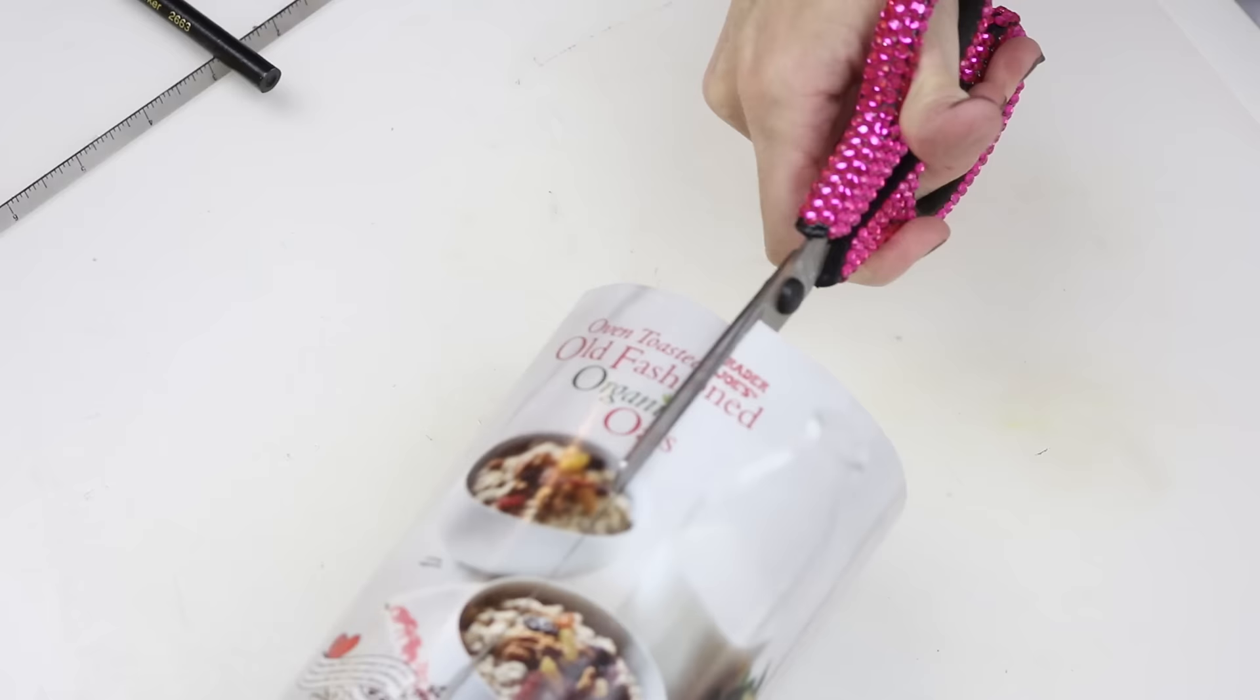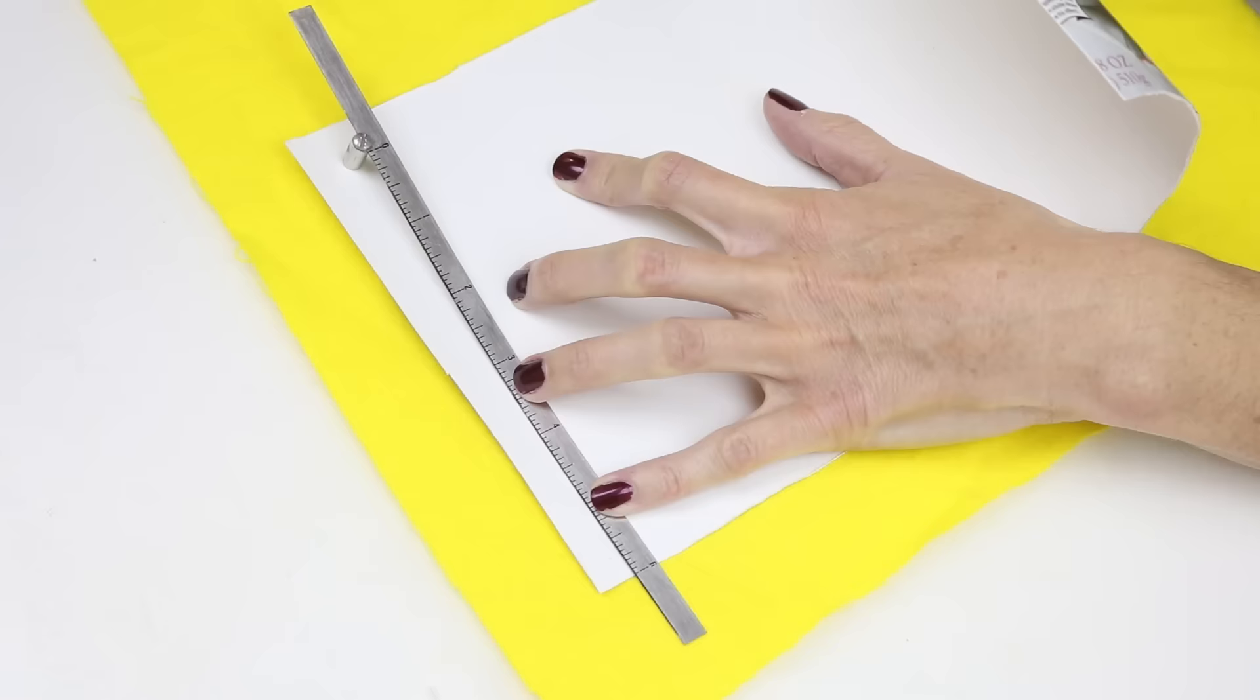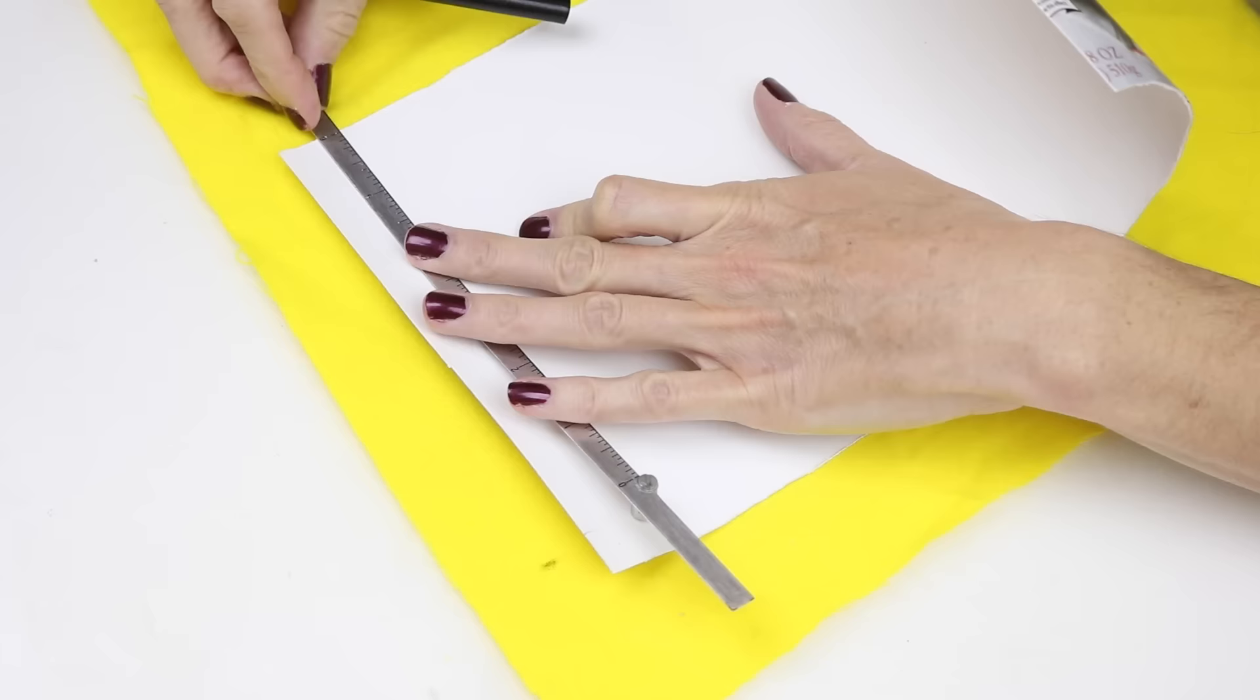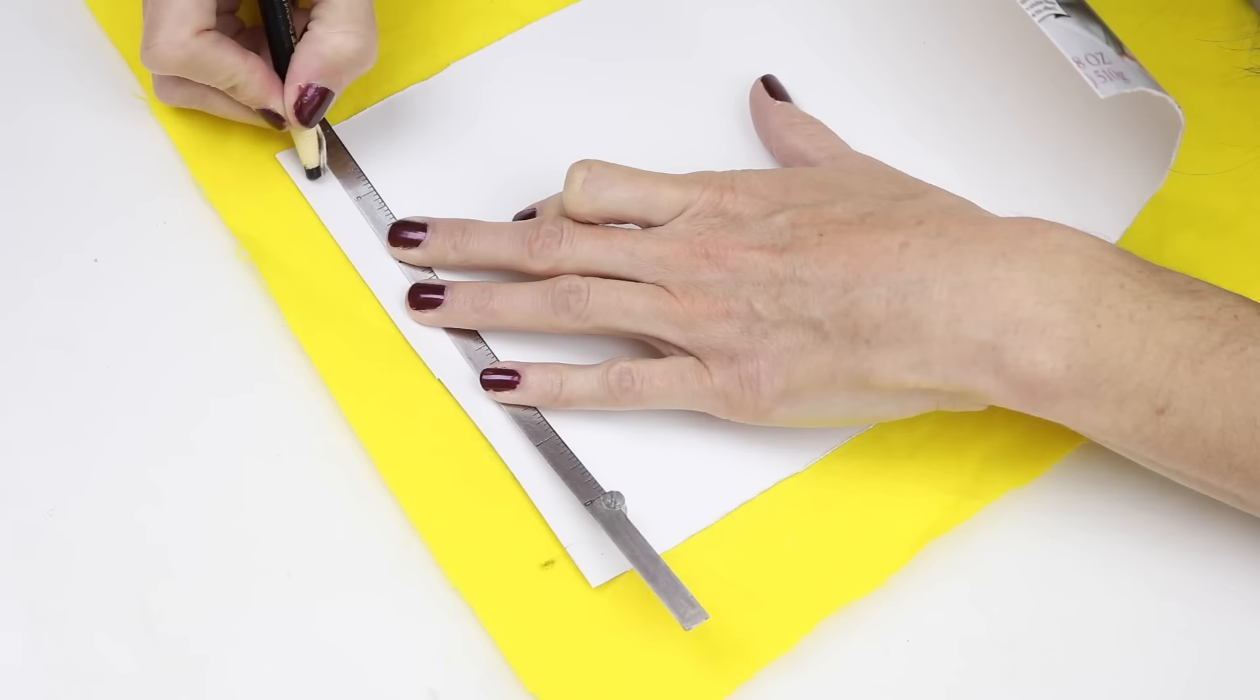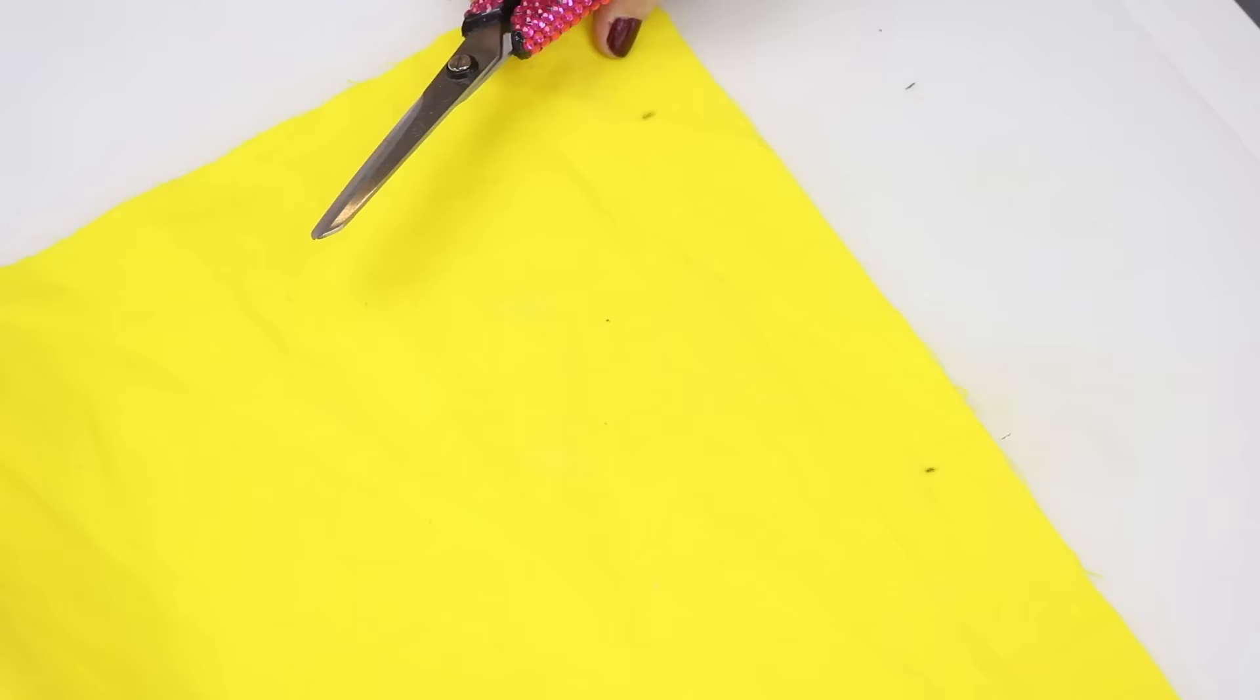Now you will just want to cut the oatmeal container like this. Then take a piece of orange fabric and mark a half an inch in like you see me doing here. Cut that out.